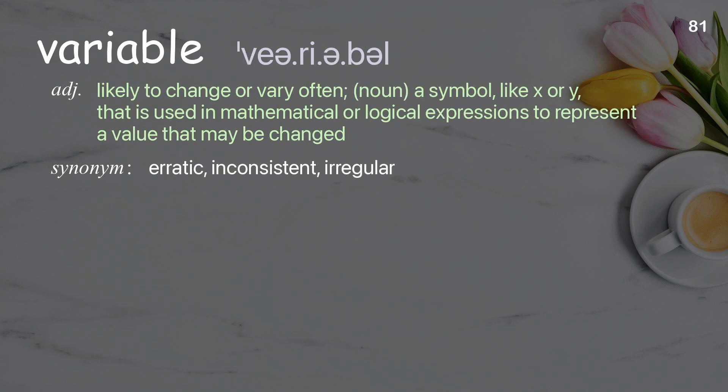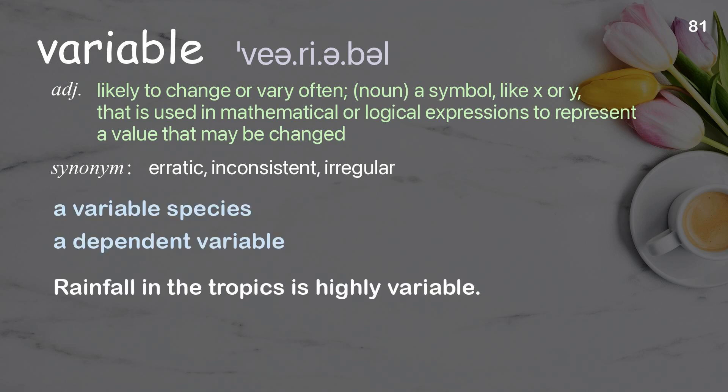Variable: likely to change, or very often changing. Noun: a symbol, like X or Y, that is used in mathematical or logical expressions to represent a value that may be changed. Examples: a variable species, a dependent variable. Rainfall in the tropics is highly variable.